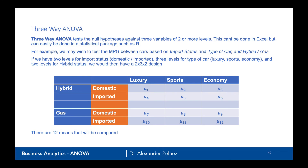Finally, let's briefly discuss three-way ANOVA. The three-way ANOVA tests the hypothesis against three variables of two or more levels — for example, we might add hybrid versus gas as a third variable for car type. We can't do this in Excel, but it can be done in other statistical packages. So if we wish to test miles per gallon based on import status, type of car, and hybrid or gas, that gives us three independent variables and 12 means that we're comparing.